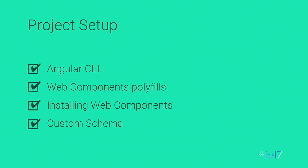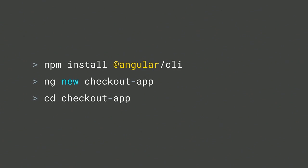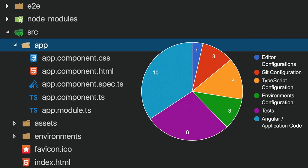For project setup, I'm using the Angular CLI. I'll NPM install Angular CLI, then use the ng-new command to scaffold the project. A CLI project has everything you need: editor configurations, Git configurations, TypeScript, environmental configurations, and tests. In the source/app folder you'll see the core Angular app code — modules, components, their TypeScript, HTML, and tests.